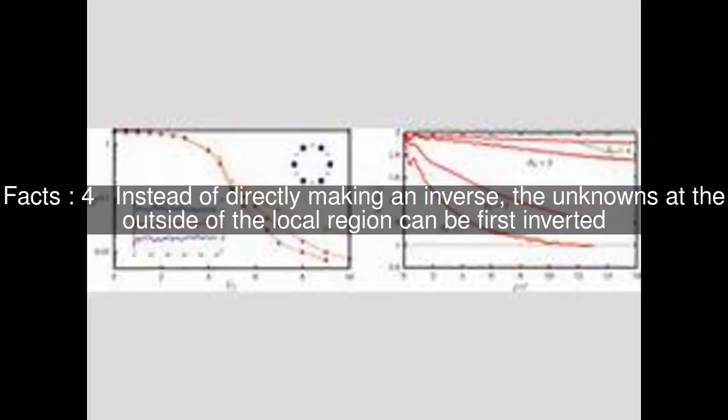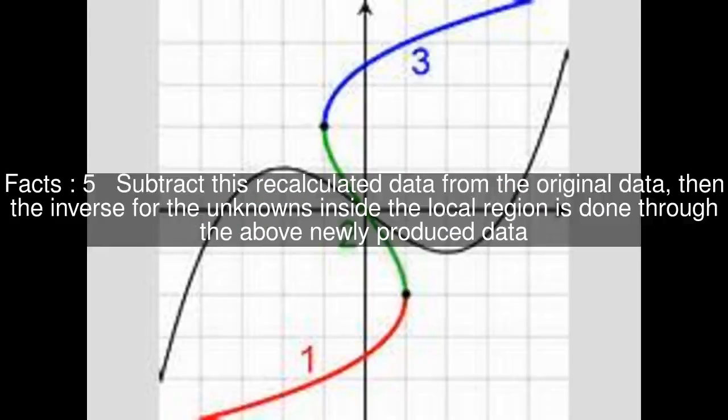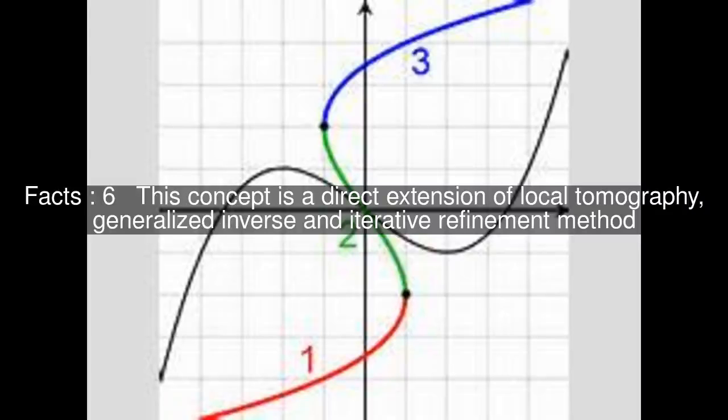Instead of directly making an inverse, the unknowns at the outside of the local region can be first inverted. Subtract this recalculated data from the original data, then the inverse for the unknowns inside the local region is done through the above newly produced data.